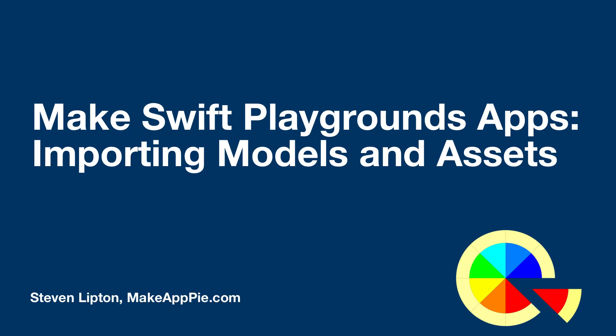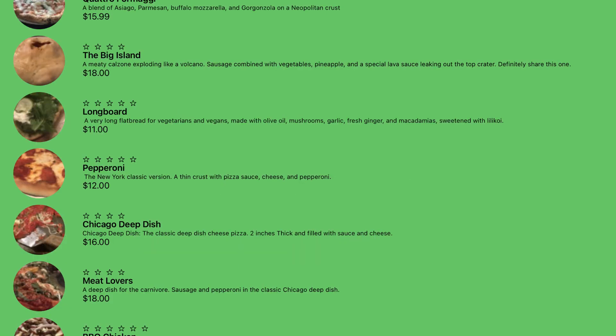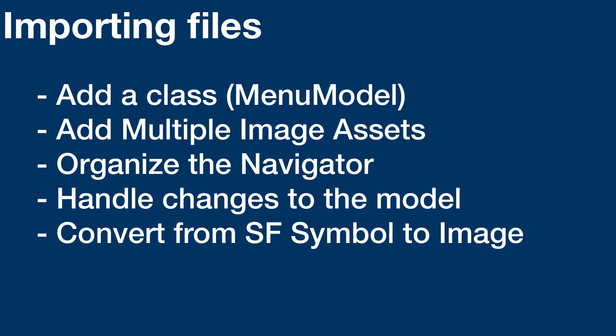There's a point in every project where you'll need real data. We've been using SF symbols and placeholder text in our wireframes. In this lesson, we're going to add the menu for the Hooli Pizza Company into our project by importing a model and assets, while reviewing much of what we've covered as we get these new models and assets working.